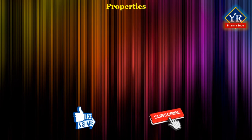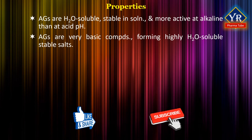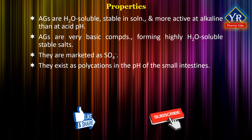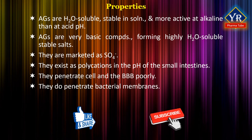Aminoglycosides are water-soluble, stable in solution and more active at alkaline than at acid pH. Aminoglycosides are very basic compounds forming highly water-soluble stable salts. They are usually marketed as sulfates. They exist as polycations in the pH of the small intestines and are not significantly absorbed from the gut and must therefore be administered parenterally. They penetrate cells and the blood-brain barrier poorly. However, they do not penetrate bacterial membranes by a complex series of biochemical events. Selective toxicity may be partially due to these factors.